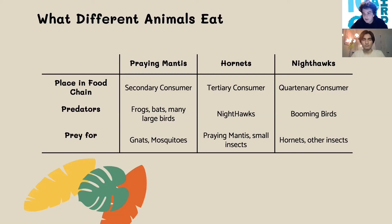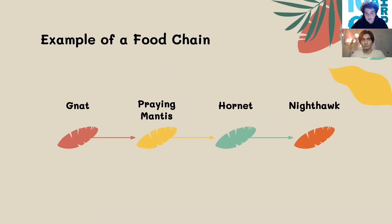Hornets will prey on small insects like the praying mantis. Then we have nighthawks, which are quaternary consumers. In the previous slide they were at the top of the food chain; one of the predators of nighthawks would be booming birds, and nighthawks prey on small insects like those hornets. So here is an example of how these animals fit into a food chain: a nighthawk is essentially at the top because it eats hornets, the hornet eats the praying mantis, and the praying mantis eats the gnats. This is also just a small part of a much larger food chain, because it would be almost impossible to include every single animal.